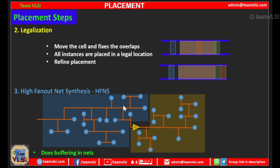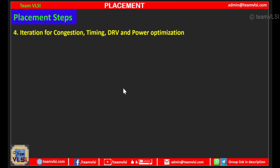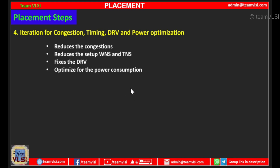The next step is iteration for congestion, timing, DRV, and power optimization. The tool tries to reduce congestion first, then reduces setup WNS and TNS, fixes DRV violations, and optimizes for power consumption. It takes quite a long time to fix these things, and whatever is possible the tool will try to fix in the first pass.